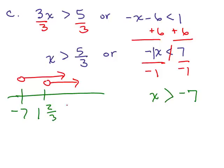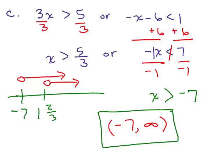Because once it's bigger than negative 7, it's automatically bigger than 1 and 2 thirds. So the final answer to this one is just bigger than negative 7, in interval notation, that's negative 7 to infinity. And that's the answer to this one.